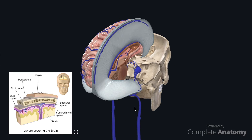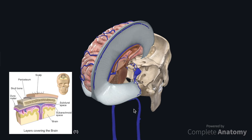And then finally, although we can't see it on the model, the diaphragma sellae which forms a dural roof over the pituitary gland.